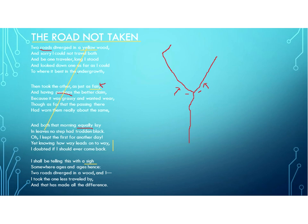I want you to notice another interesting fact about these first three stanzas: they all take place in the past. This fourth stanza takes place in the future. I shall be telling this with a sigh somewhere ages and ages hence. Two roads diverged in a wood, and I — I took the one less traveled by, and that has made all the difference.